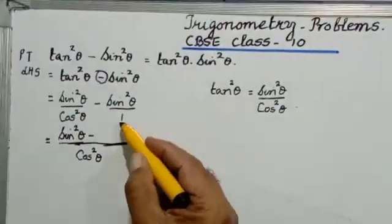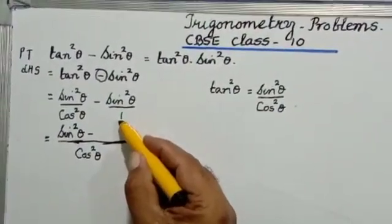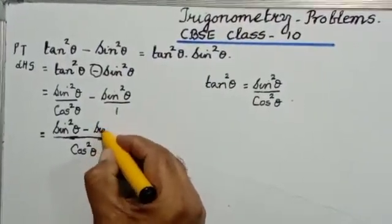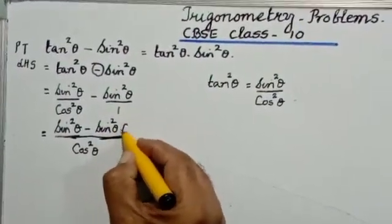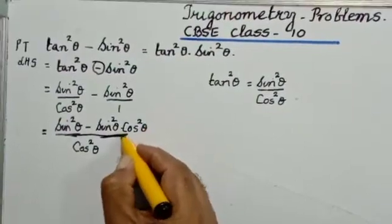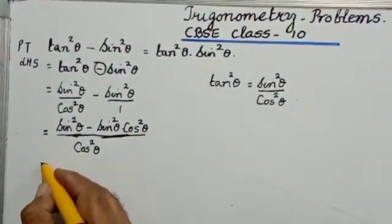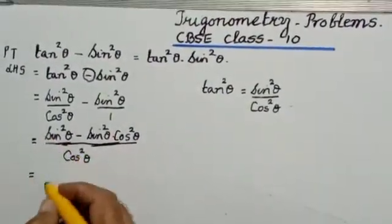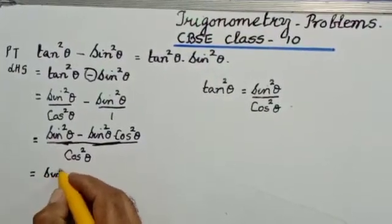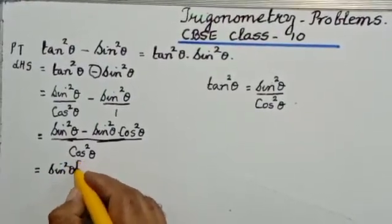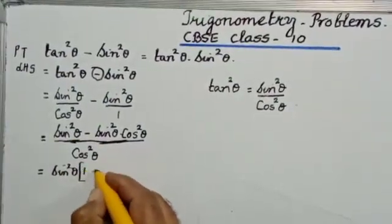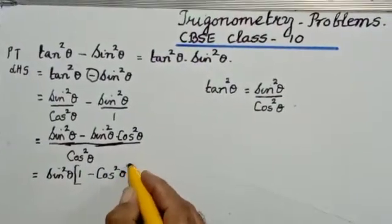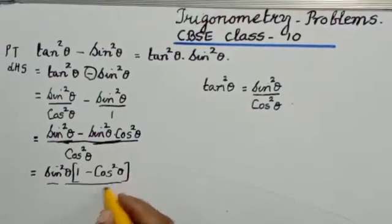Minus: cos squared theta divided by the second denominator 1 is cos squared theta. Cos squared theta multiplied by the second numerator gives sin squared theta into cos squared theta. In the numerator, I can remove sin squared theta as a common factor. If I remove sin squared theta as a common factor, I will have 1 minus cos squared theta left, divided by cos squared theta.